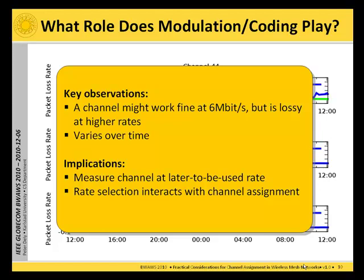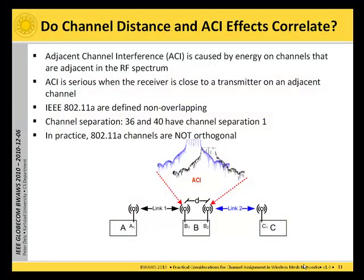This also gives a hint that rate selection interacts with channel assignment. The next question we ask is: do channel distance and ACI effects correlate with each other? ACI, also known as adjacent channel interference, is caused by energy on channels that are adjacent or close by in the RF spectrum.